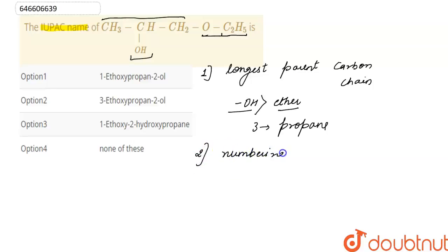Now, if we start numbering from this side - that is one, two, and three - then some functional group gets second position and substituent is present on first position.